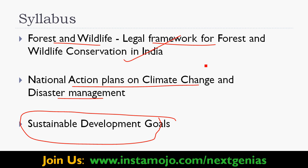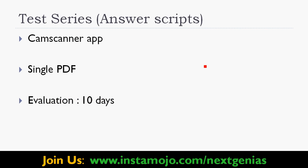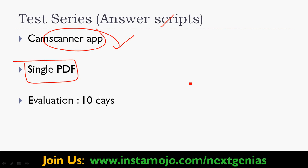This will be a link to the premiums main screen. For the next test series answer scripts, you can download the CamScanner app. Download the CamScanner app and create a single PDF. If you have any questions about the PDF, there is an application to help you read it. In CamScanner app, download as a single PDF and submit your main answer scripts. That's it for this video — thank you for watching.